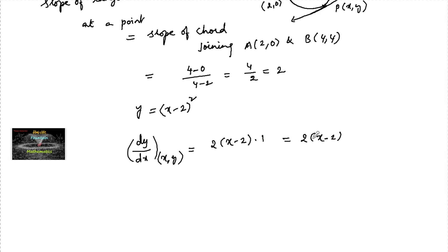Slope of tangent is given as 2. Since dy/dx at point (x, y) is equal to 2, which implies 2(x - 2) is equal to 2, or we can write x - 2 is equal to 1, which implies x is equal to 1 plus 2, that is 3.